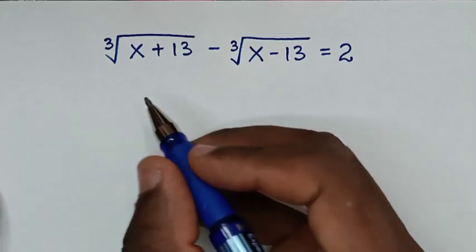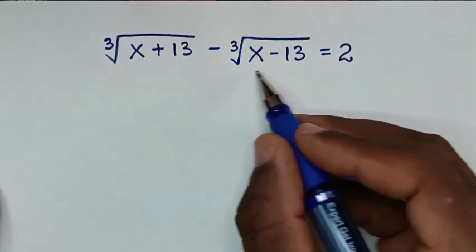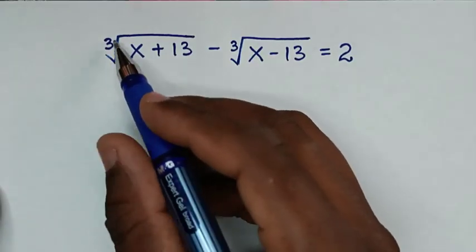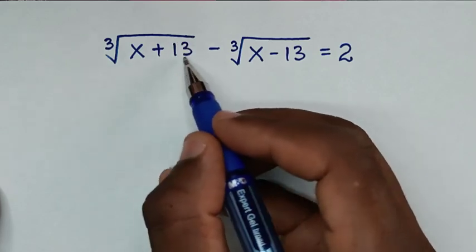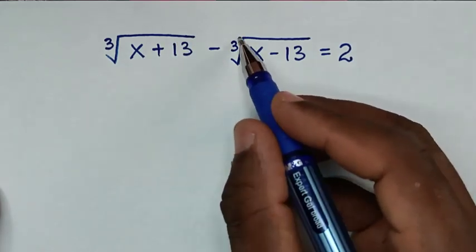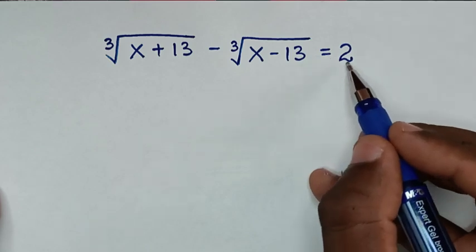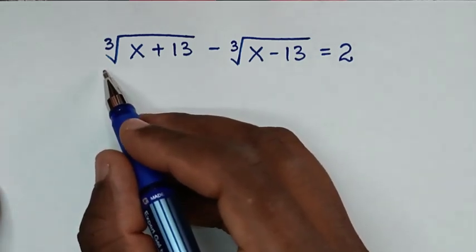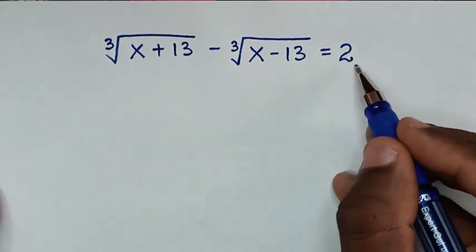Hello, you are welcome to solve this math problem, which is: cube root of (x + 13) minus cube root of (x - 13) is equal to 2. We need to find the values of x from this equation.